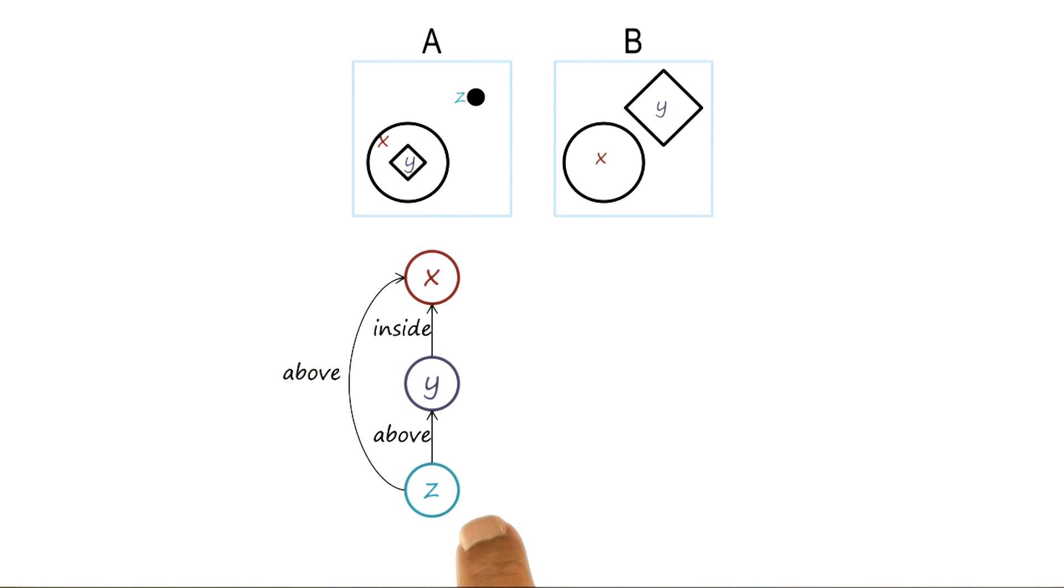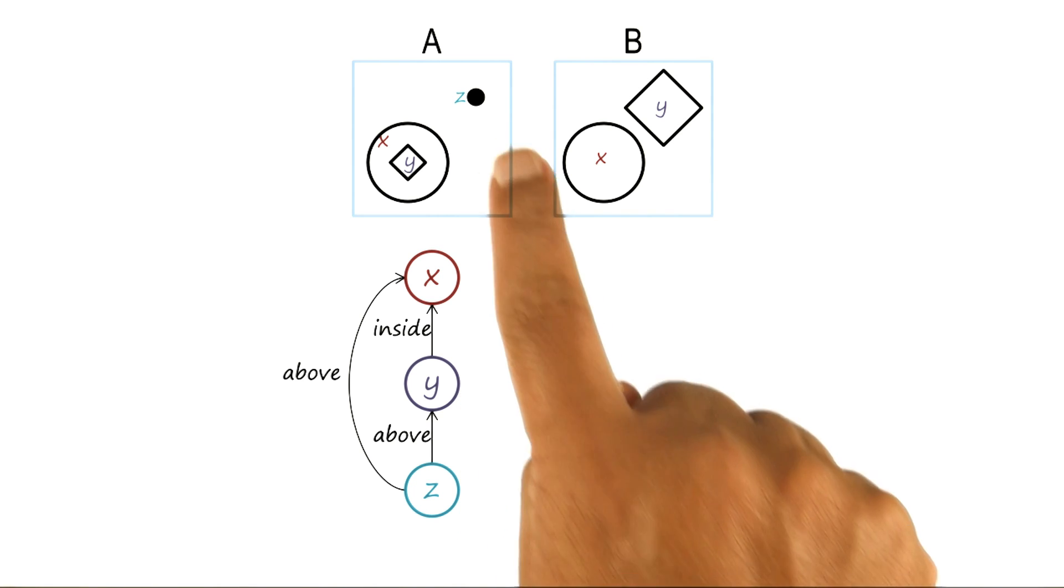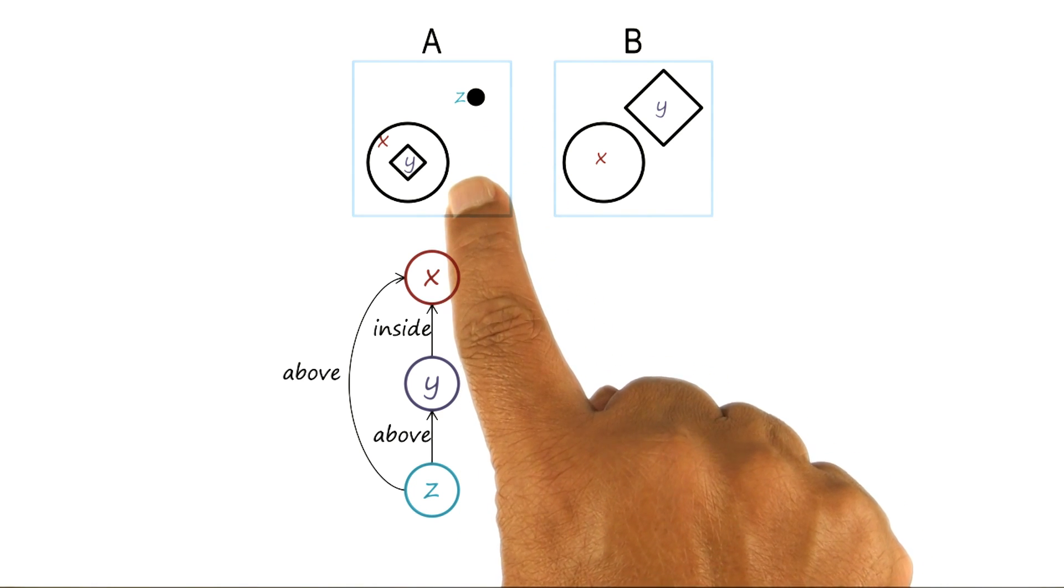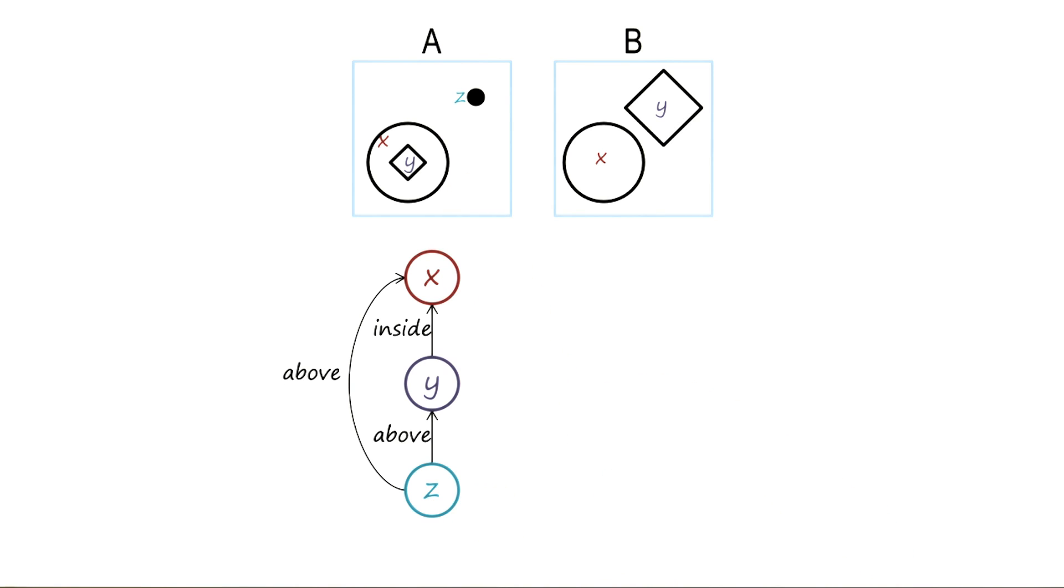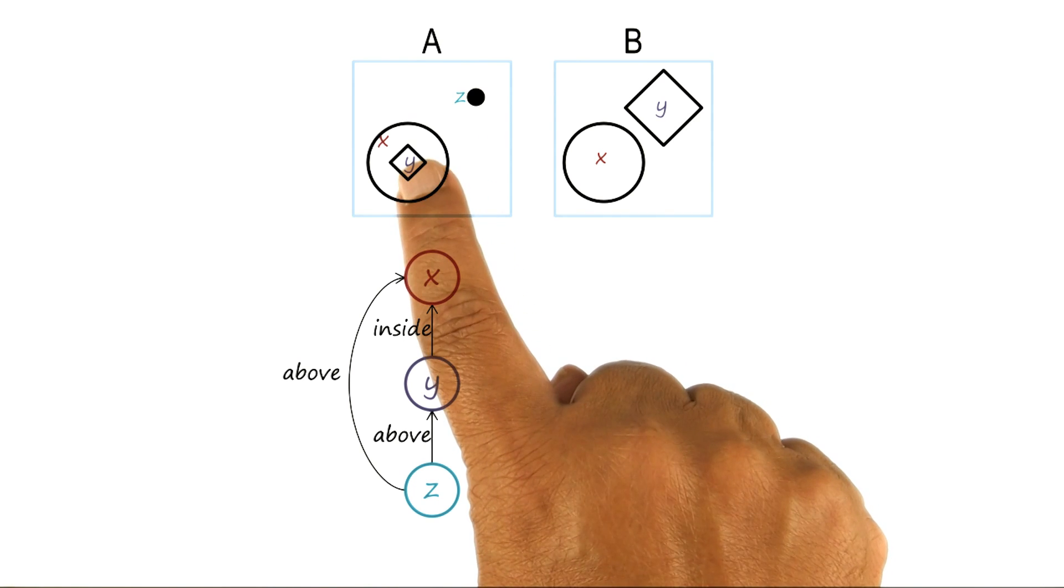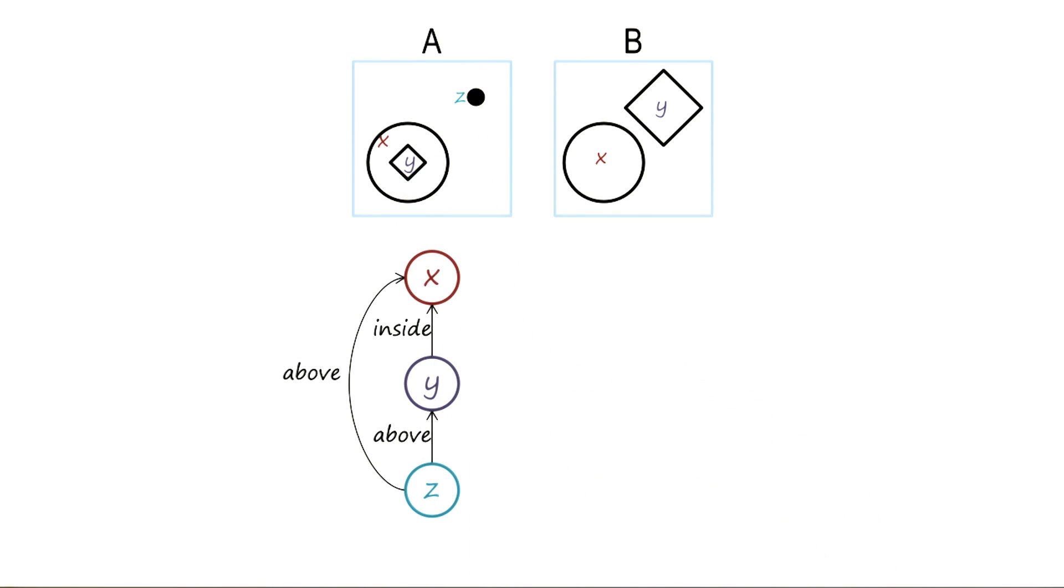Similarly, I may say that Z is above Y, because Z is above Y in the image A. I may also say that Z is above X, because Z is above X in image A. In this way, a semantic network representation of the image A captures both the objects and the relationships between the objects.